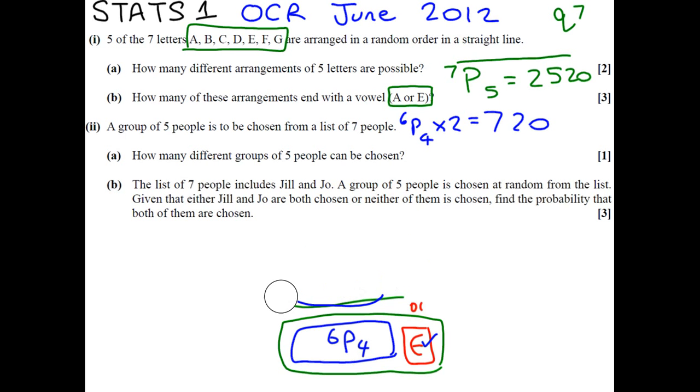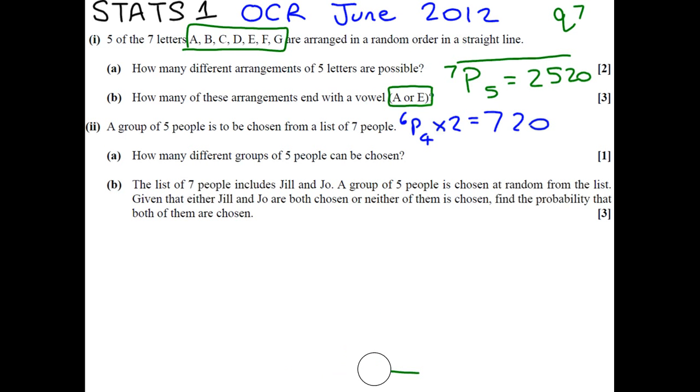Moving on to part 2, a group of 5 people is to be chosen from a group of 7 people. These numbers sound familiar, maybe because they're using the same ones. This time, we're just talking about different groups. The key word before to know that order matters was arrangements. Different groups?